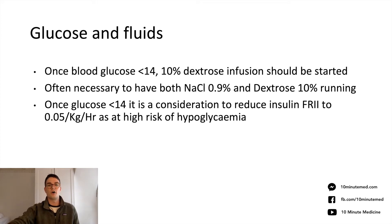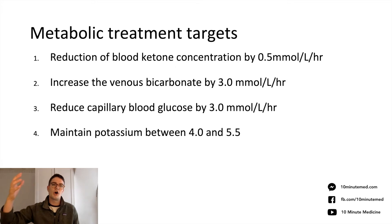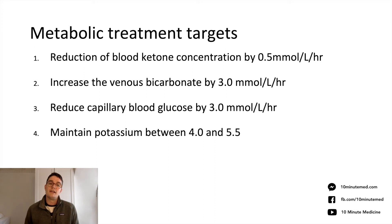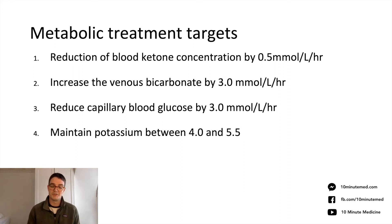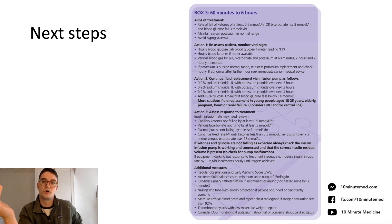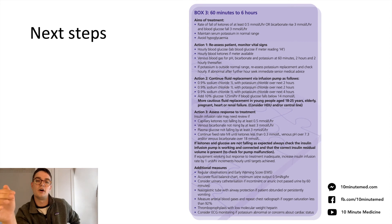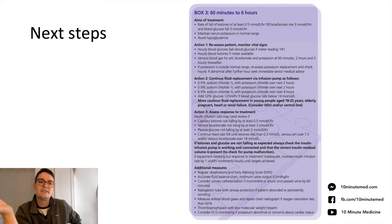What are our targets in DKA? We're aiming for reduction in blood ketones by 0.5 mmol/L per hour, increase in venous bicarbonate by 3 mmol/L per hour, reduction in capillary blood glucose by 3 mmol/L per hour, and maintaining potassium between 4 and 5.5. Reassessment of the patient follows the protocol — nurses will have checklists at hour one, hour two, and so on — alongside the fluid replacement plan.